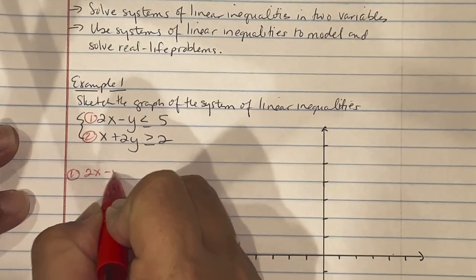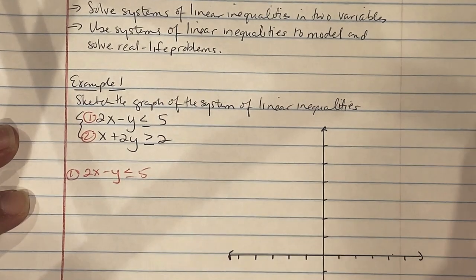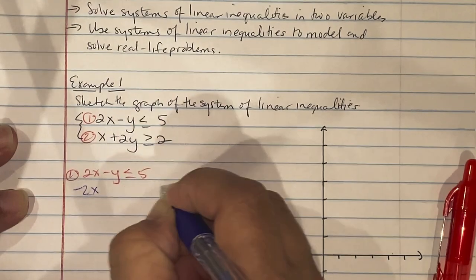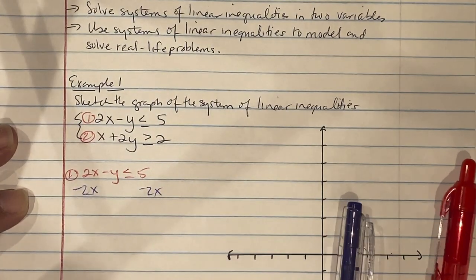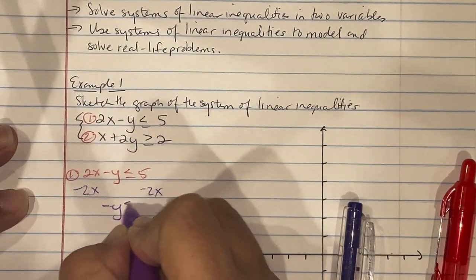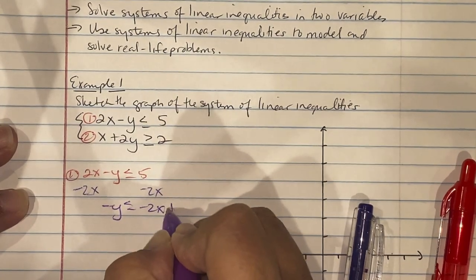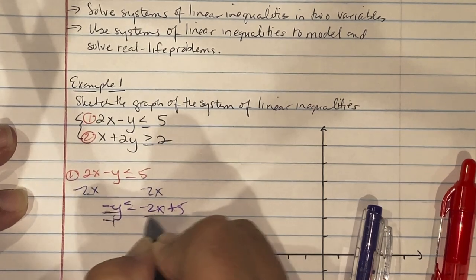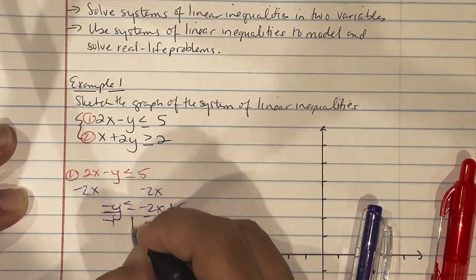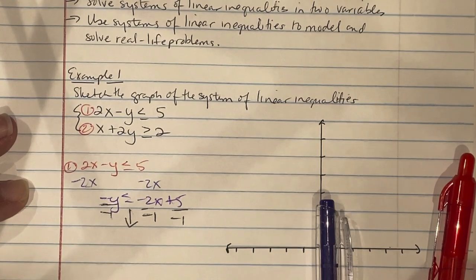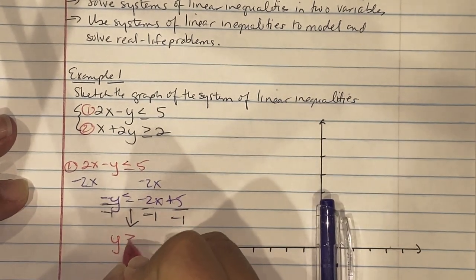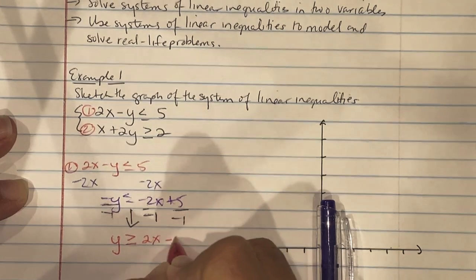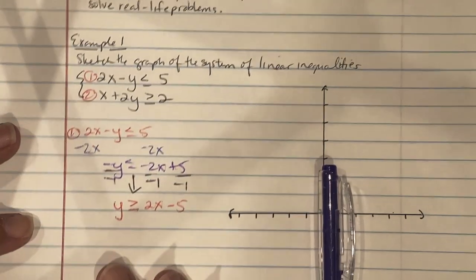Solve each equation individually for y = mx + b. For equation 1, subtract the 2x over to get negative y is less than or equal to negative 2x plus 5. Then divide by negative 1 — when you divide by a negative it changes the direction of the inequality — so it becomes y is greater than or equal to 2x minus 5.